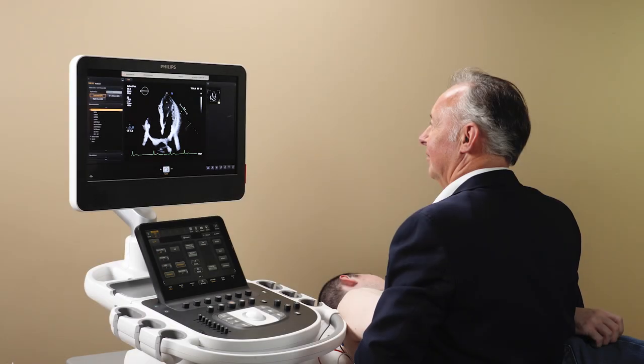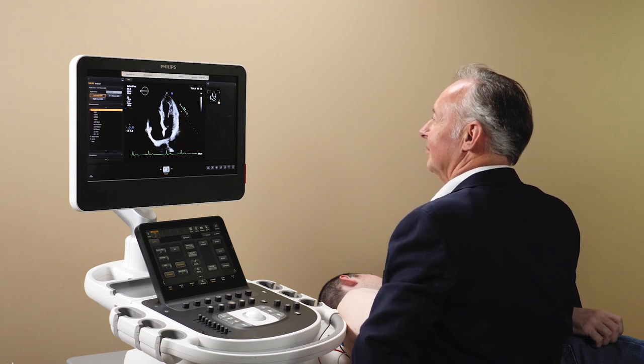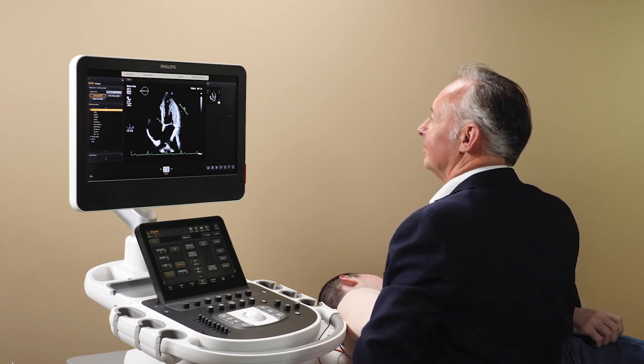To calculate the longitudinal strain of the left atrium, we need to acquire an LA-focused apical 4 chamber view with a minimum loop length of two beats. Make sure you have a good ECG signal.